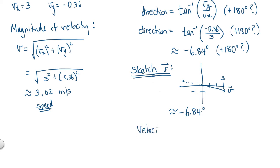So to give our final answer, the object's velocity after 2 seconds is 3.02 meters per second at a direction of negative 6.84 degrees.